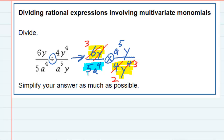Looking at the other diagonal, the only whole number I have is 5, so I can't cancel anything with that. But for the a's, I do have a to the fourth and a to the fifth. All 4 of these a's can cancel 4 of the a's at the top, and since I had 5 a's, if I cancel 4 of them, I'm only going to be left with 1 a at the top.